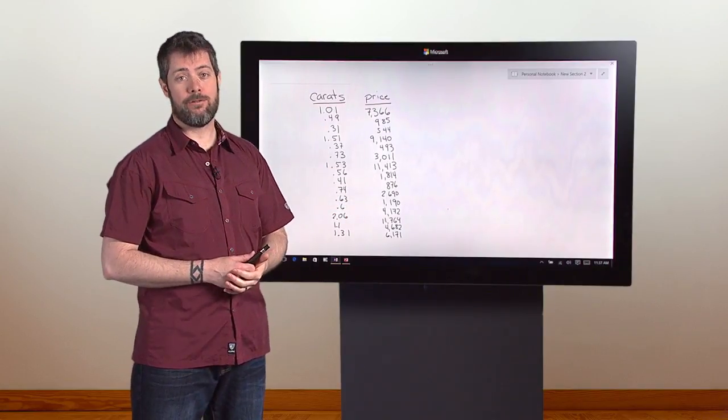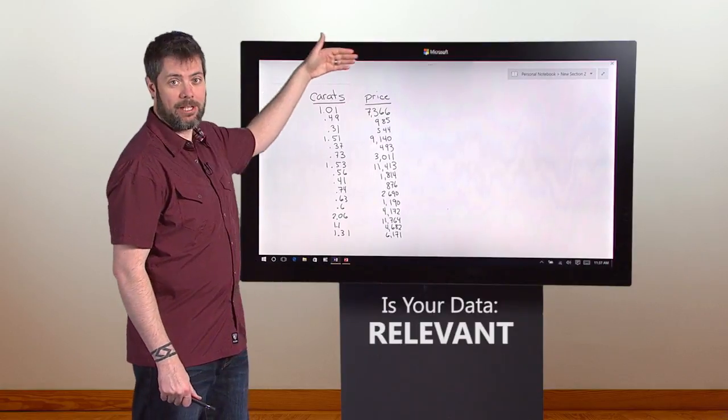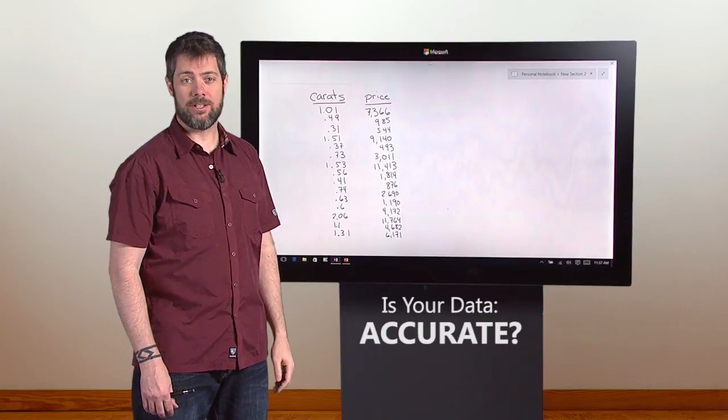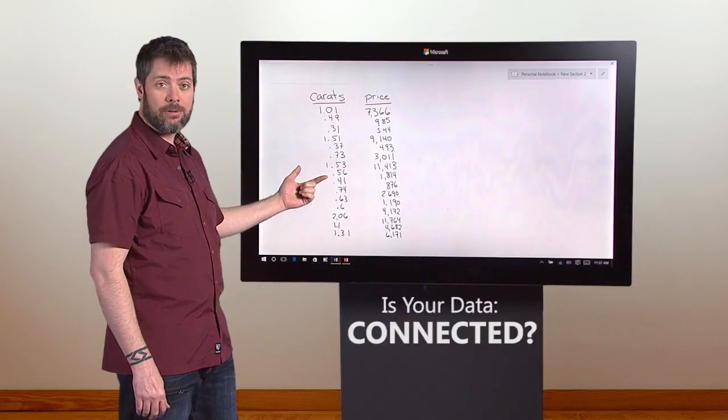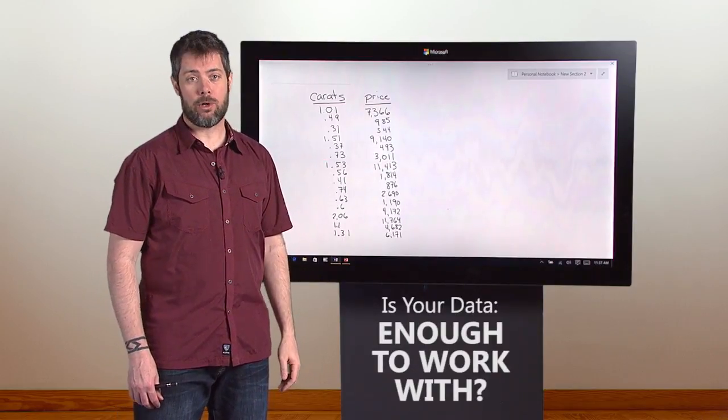Notice that it meets our criteria for quality. The data is relevant. Weight is definitely related to price. It's accurate. We double checked the prices that we wrote down. It's connected. There are no blank spaces in either of these columns. And as we'll see, it's enough data to answer our question.